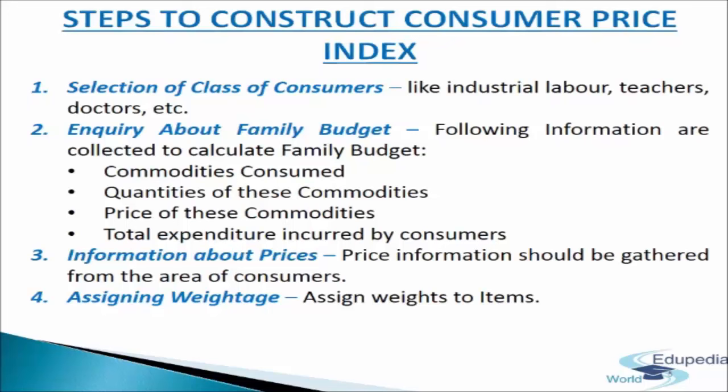The first step is selection of class of consumer. The first step is to decide the particular class of people for whom the index number is intended, such as industrial workers, government employees, low income or middle income class people, etc. The coverage should also be clearly earmarked, i.e., the geographical area — rural or urban, city or town, etc. The selected class should form a homogeneous group from the point of view of income and habits.